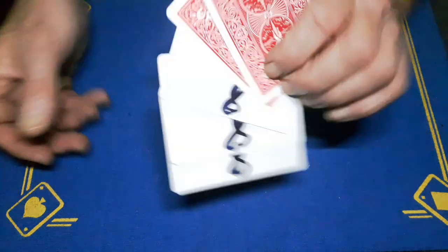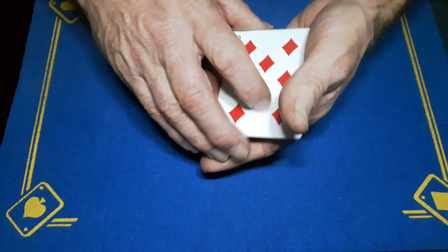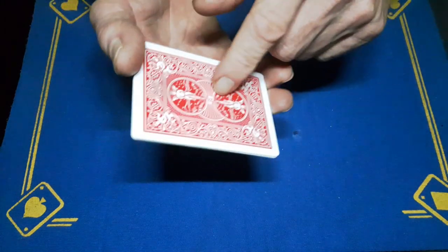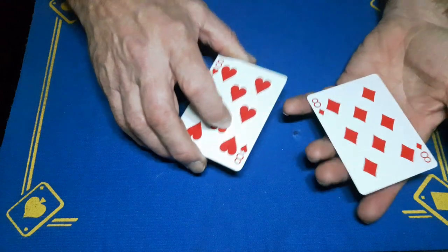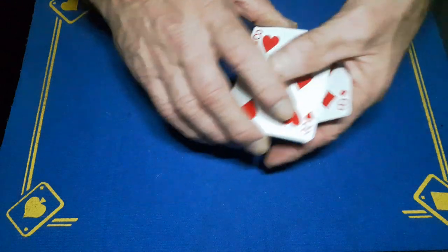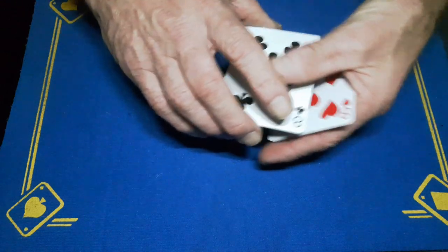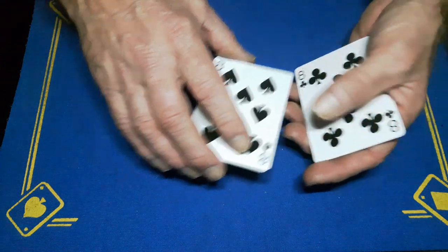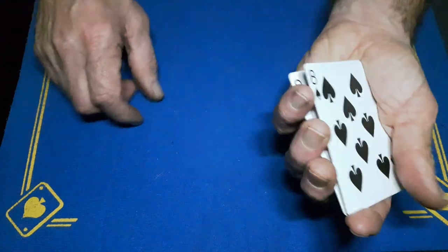You're going to start the trick by doing a frustration count, showing the back, saying about the markings and just showing all the faces of the cards. I mean, can you see the markings on here?